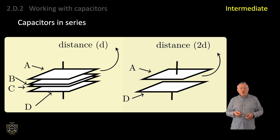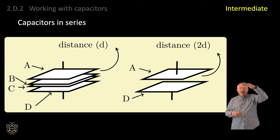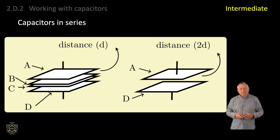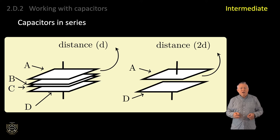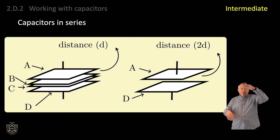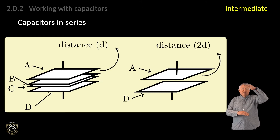The equivalent capacitor is shown on the right-hand side of the drawing. It effectively has the original plates A and D, but with twice the distance between the plates. Examination of the formula reveals that doubling the distance between the plates halves the capacitance. You can visualise any number of capacitors in series in this way, and you will end up with the top plate from the first capacitor and the bottom plate from the last capacitor. The distance between these plates will be the combined distance of all the capacitors, thus reducing the overall equivalent capacitance.